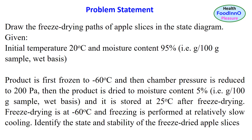Problem Statement: Draw the freeze-drying path of apple slices in the state diagram. Given: initial temperature 20 degrees C and moisture content 95%. The product is first frozen to minus 60 degrees C, then chamber pressure is reduced to 200 Pascal. The product is then dried to moisture content 25% and 5%, and stored at 25 degrees C after freeze drying. Freeze drying is at minus 60 degrees C and freezing is performed at relatively slow cooling. We need to identify the state and stability of the freeze-dried apple slices during storage at 25 degrees C.